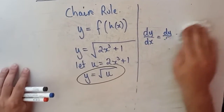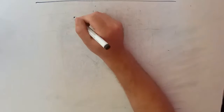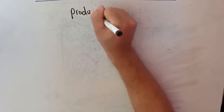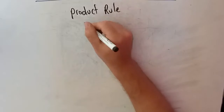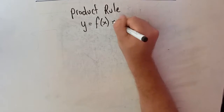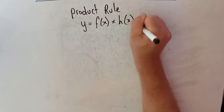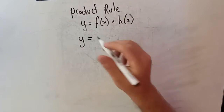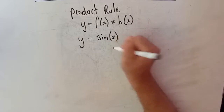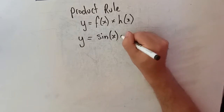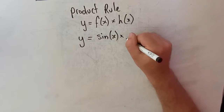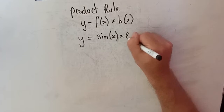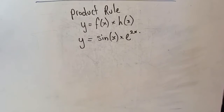So that's the chain rule. Next up is the product rule — where we've got a function multiplied by another function. An example: let y equal sine of x times e to the 2x.